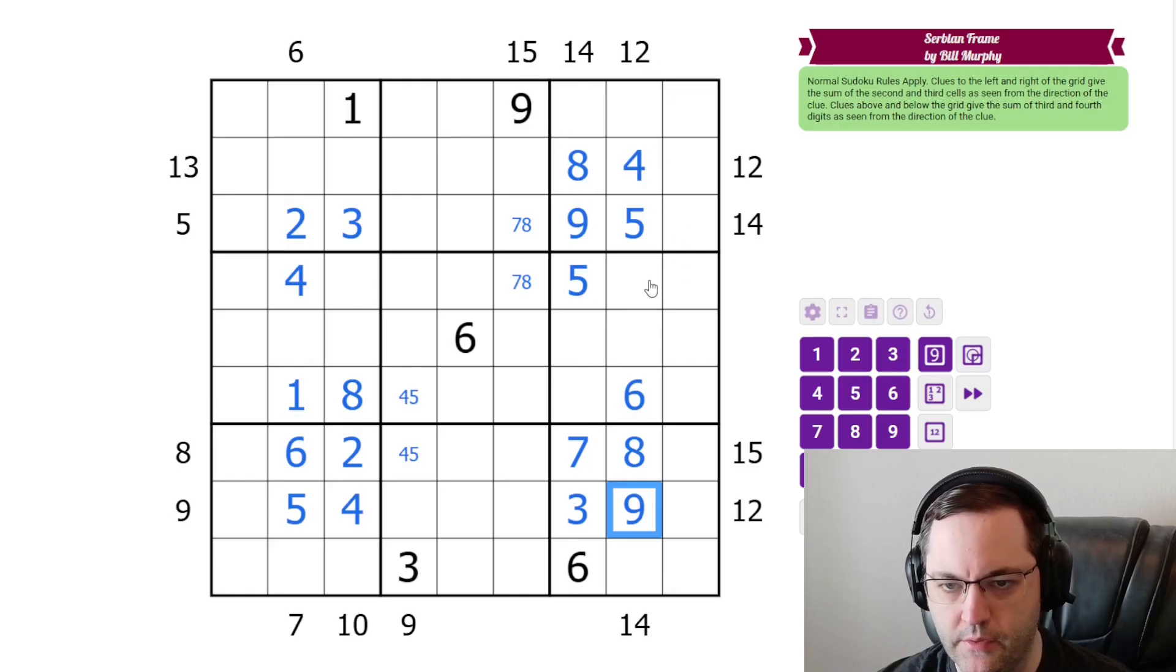All right. The 12 here needs a seven. So we've got 12, 14, 15, six. Haven't done the 13 here. 13 could be four, nine. We've got a four there. Five, eight. We've got an eight there. So it must be six, seven in that order. We've got five, eight, nine, seven, 10, nine, 14, 15, and 12, 14, and 12. That's all the clues.